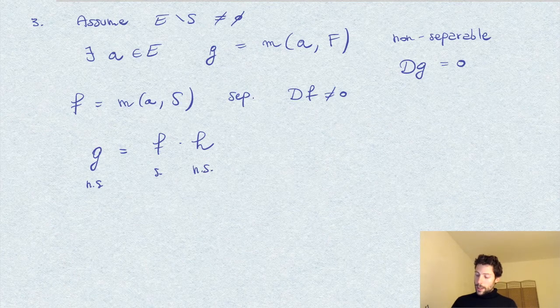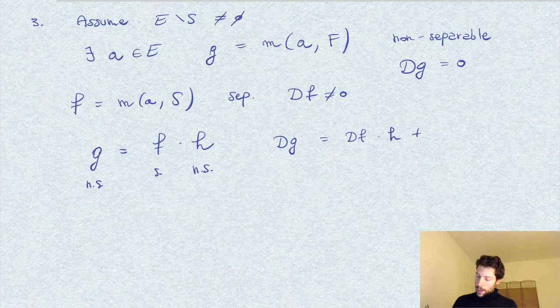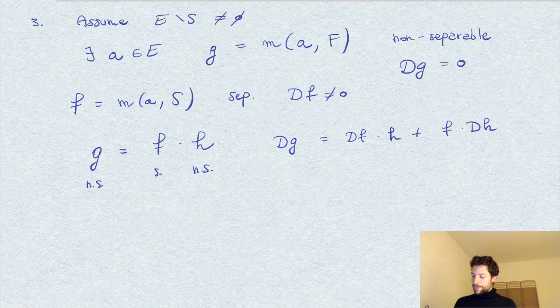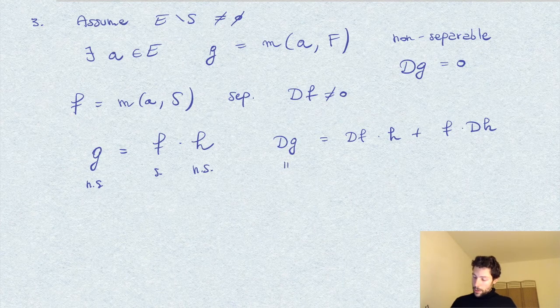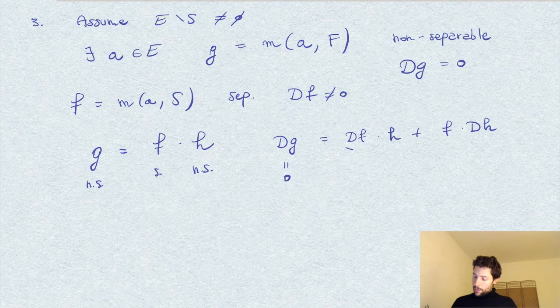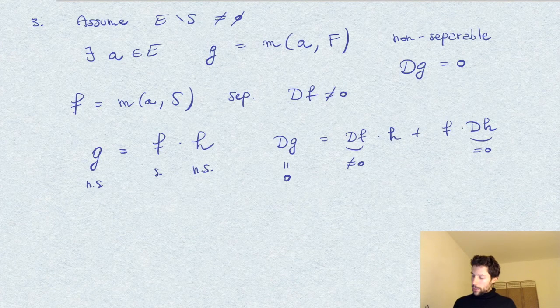So, by taking the derivative of these, we have that DG is equal to F times DH plus DF times H. And now what we have here, we have that this is zero, DF, this is non-zero, and on the other hand, DH must be zero, since H is non-separable.